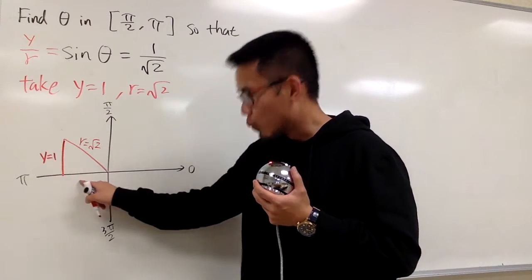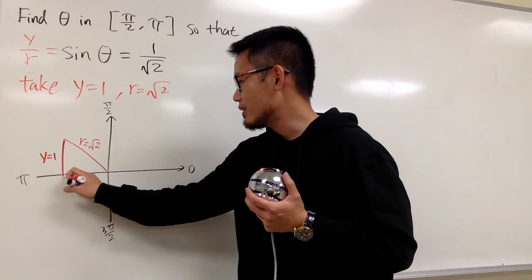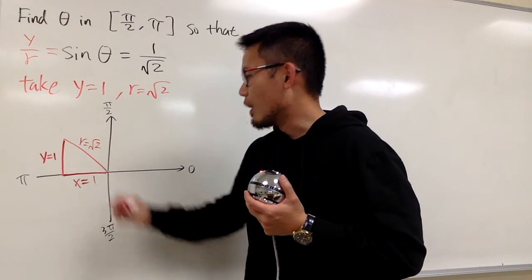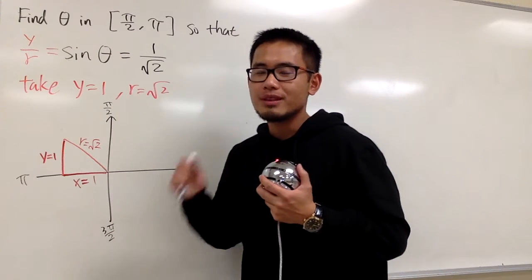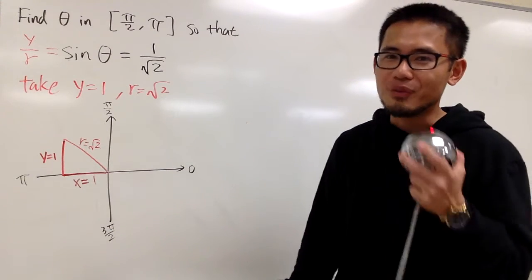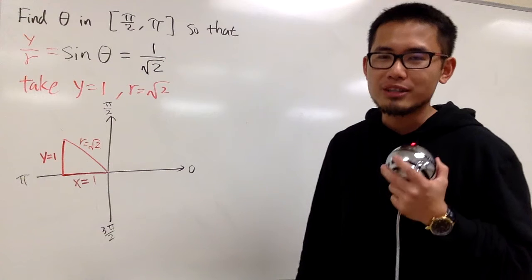This is 1, 1, isn't it? So you can say that this is also 1, 1, square root of 2, the ratio of the sides of the 45, 45, 90 special right triangle.